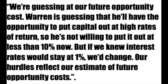We are guessing at our future opportunity cost. Warren is guessing that he'll have the opportunity to put capital out at high rates of return, so he's not willing to put it out at less than 10 percent. But if we knew interest rates would stay at one percent, we'd change. So Warren Buffett has 100 billion in cash, which means he expects interest rates to be much higher, and he's looking at investments at 10 percent. We've discussed Synchrony Financial, Store Capital, airlines — all Buffett investments that yield more than 10 percent.